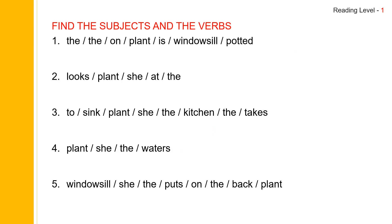Now find the subject and the verbs. First one: 'plant' is the subject, and 'is' is the verb. The potted plant is on the windowsill. Next one: 'she' is the subject, and 'looks' is the verb. She looks at the plant.